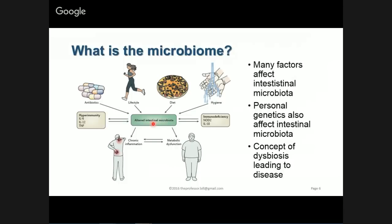If the intestinal microbiome gets altered, what are the consequences? One consequence we're becoming more aware of is that you might start to see metabolic syndrome. Through changing your gut microbiome, you could also cause metabolic dysfunction. There is some indication in the literature that inflammation in general might result from an altered gut microbiome — through hyperimmunity, or specific factors like cytokines such as interleukin-6, interleukin-12, or TNF-alpha being produced in greater quantities than normal.